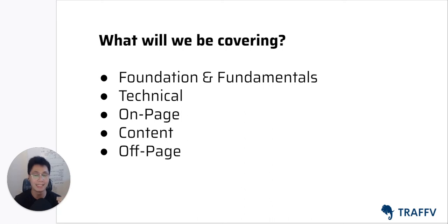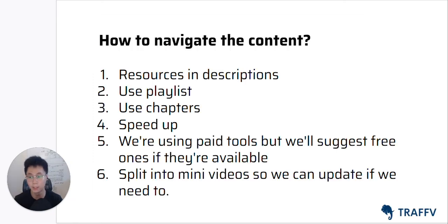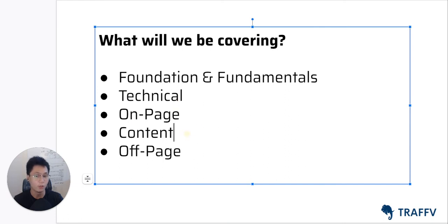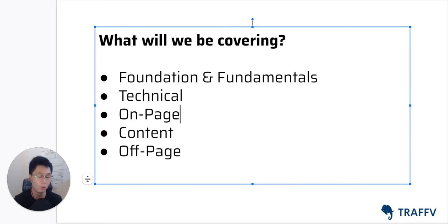If you look at this entire structure, this is the exact framework I use for all the projects I've worked on. I always believe in an inside-out approach — you always want to fix internal things first. Internal meaning your own productivity, your team's productivity, your website, your existing content. Once that's all settled, we focus on creating new stuff. On-page and content is where we think about what assets to create — mostly blog posts. Then finally comes the promotion phase, where you promote your content and learn how to get links, qualify for links, and understand your link profile.